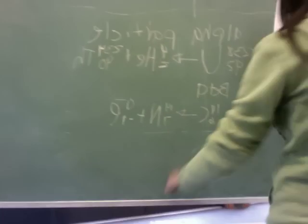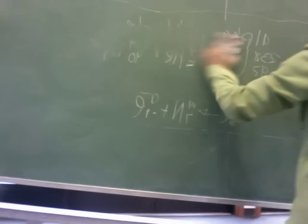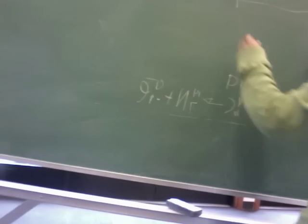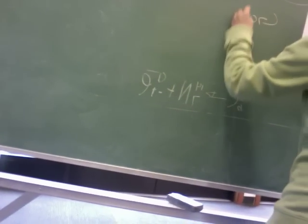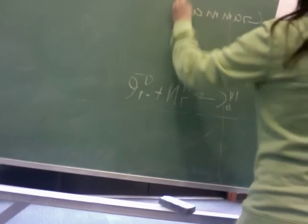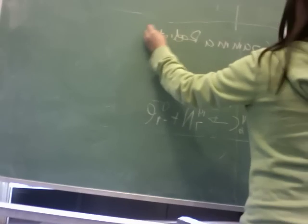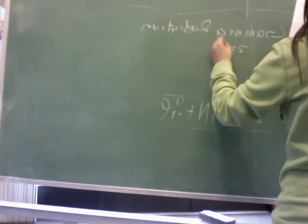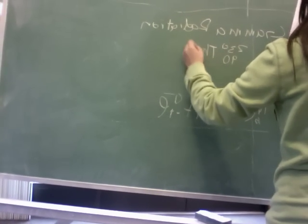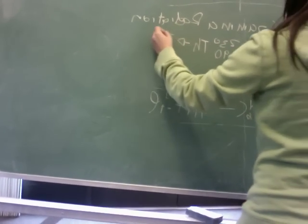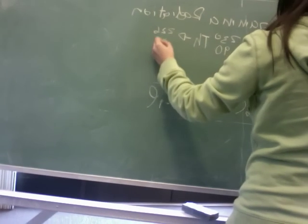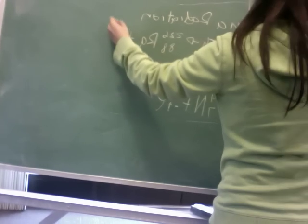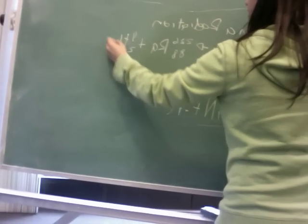The gamma radiation. So, the gamma radiation is 230 over 90 TH. It goes to 226 over 88, plus 4 over 2 HE.